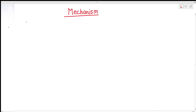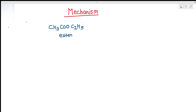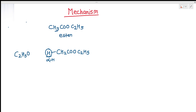In the mechanism, we start with ethyl acetate — CH₃COOC₂H₅ — our ester that has alpha hydrogen atoms. The alpha hydrogen atoms are on the carbon adjacent to the carbonyl. We can write this as CH₂COOC₂H₅ with one of the alpha hydrogens highlighted. There is also ethoxide ion, C₂H₅O⁻, present as the strong base.